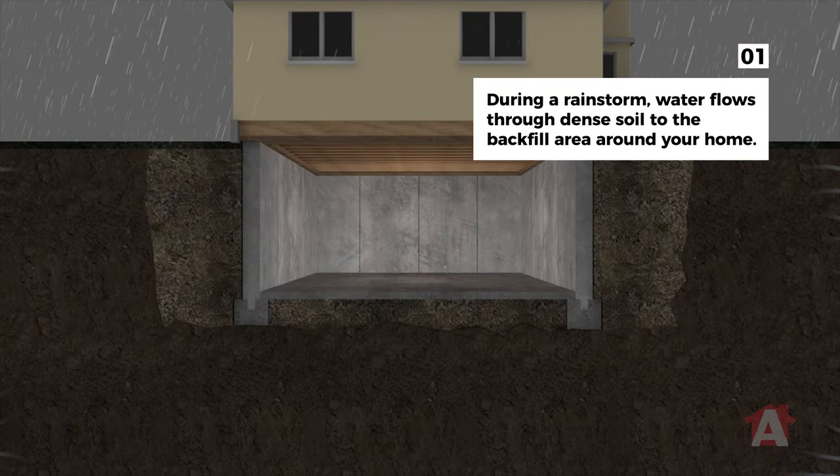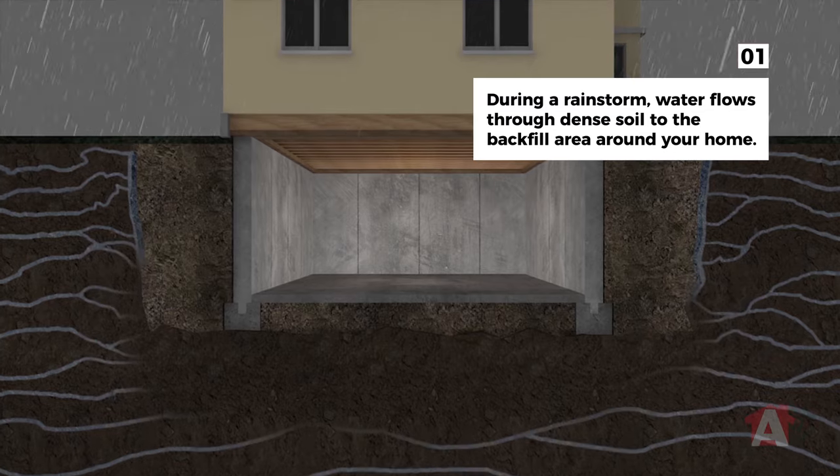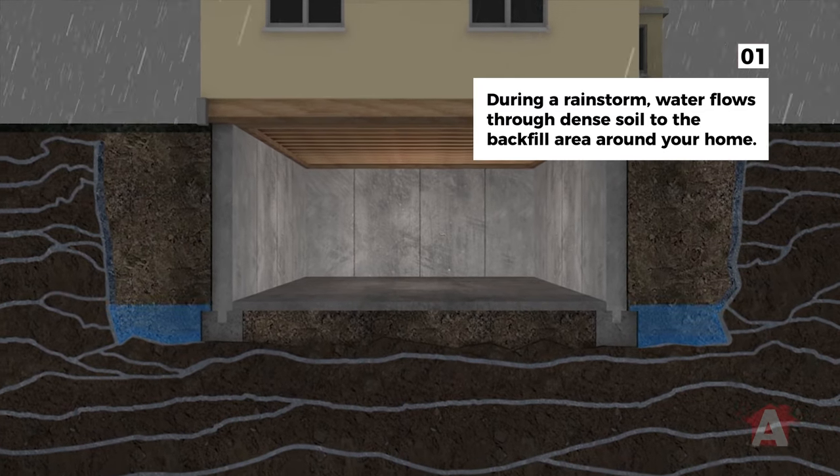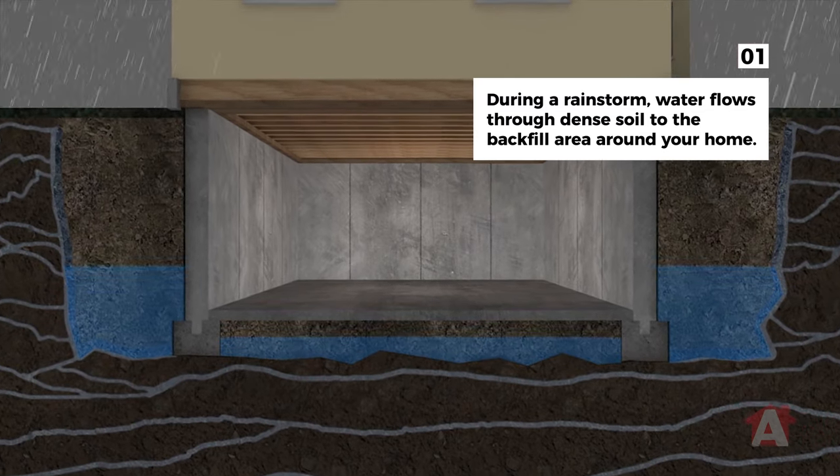During a rainstorm, underground capillaries and veins swell up, allowing water to flow through dense soil into the soft backfill soil surrounding the house.